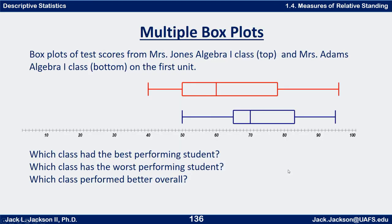Here's an example with two box plots together. These are test scores: Mrs. Jones' algebra class is on top in red, and Mrs. Adams' algebra one class is on the bottom in blue, for their first unit. The scale goes from 0 to 100 — their percentage on the test. Looking at this, which class had the best performing student, which had the worst performing student, and which class performed better overall?